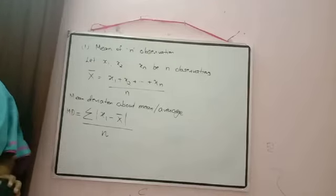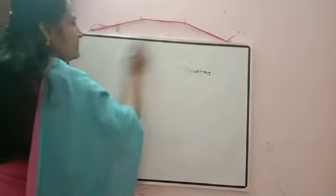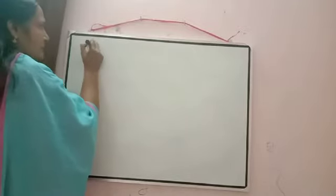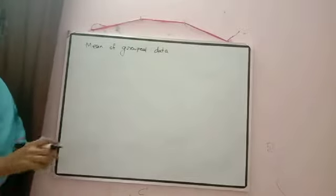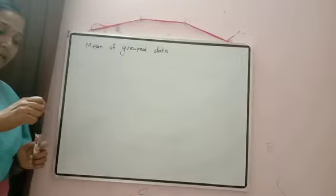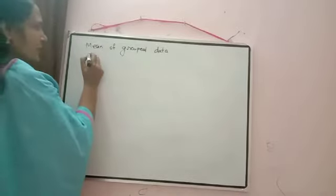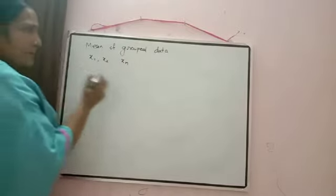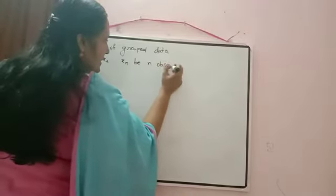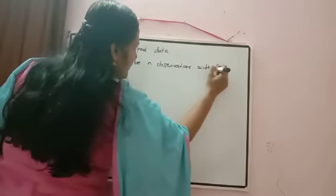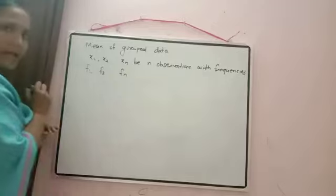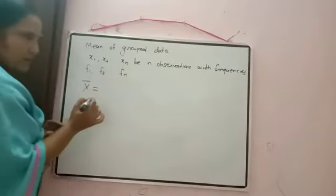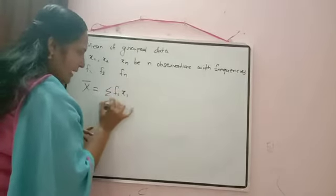This is the case when plain observations are given. Now the second case: if the observations are repeated — that is, mean of grouped data. When observations are repeated many times, instead of adding all the observations we write them in terms of frequencies. Let x₁, x₂, ..., xₙ be n observations with frequencies f₁, f₂, ..., fₙ. In that case, x̄ = Σfᵢxᵢ / Σfᵢ. We multiply each observation by its corresponding frequency, add all those products, then divide by Σfᵢ.